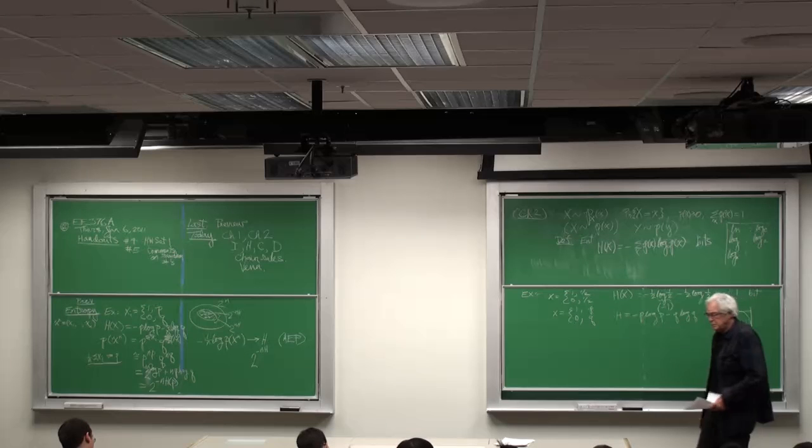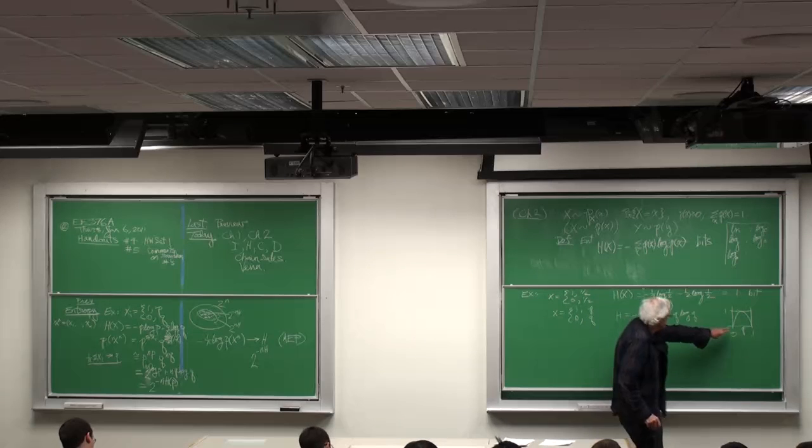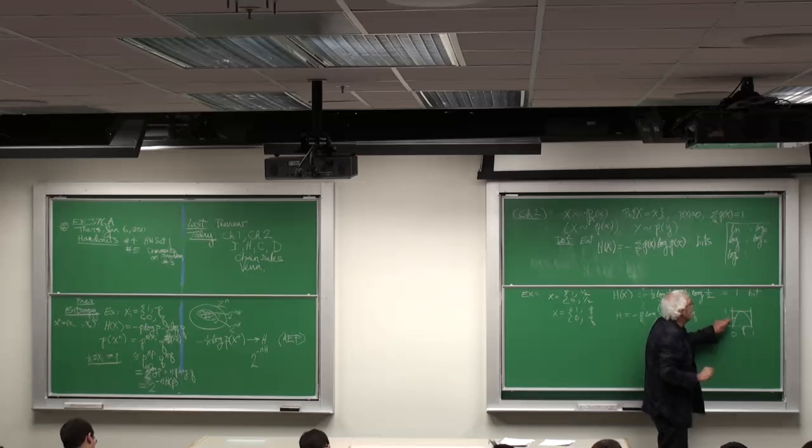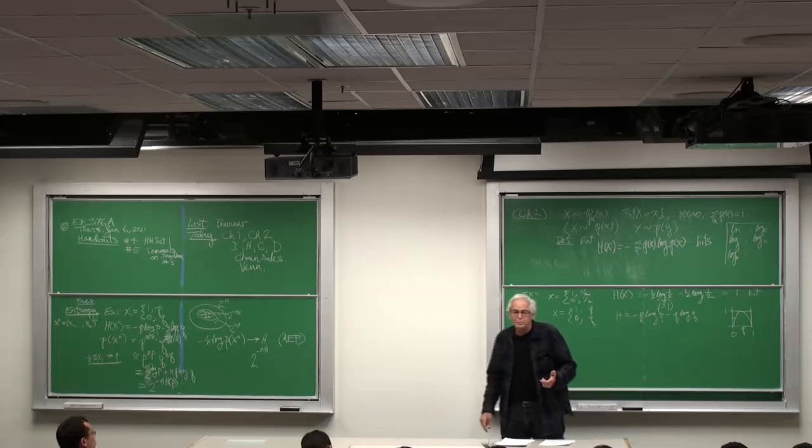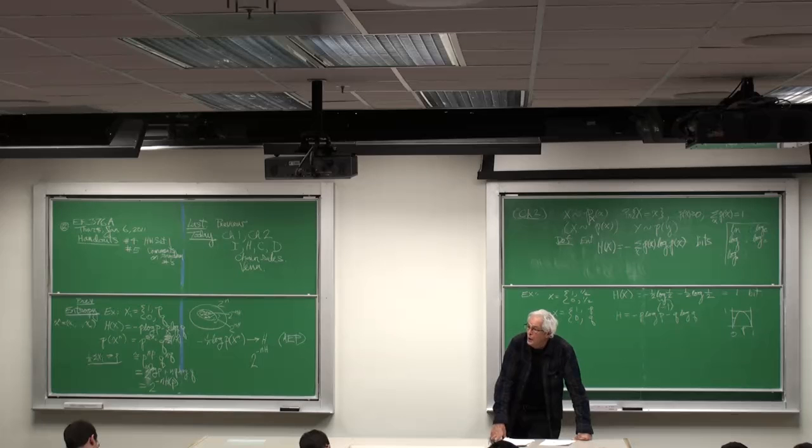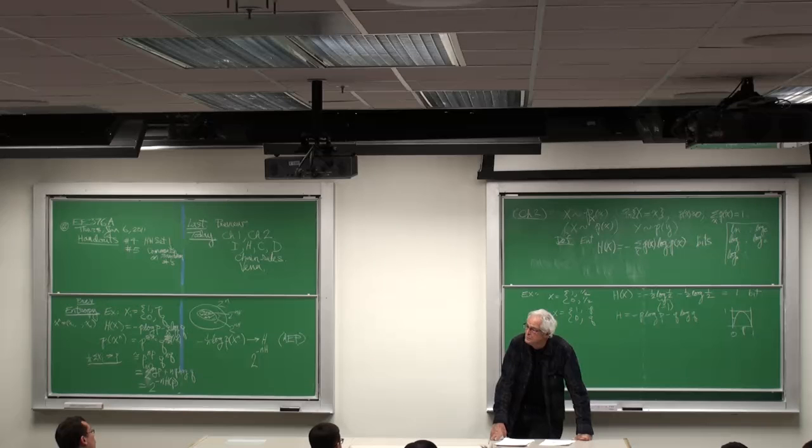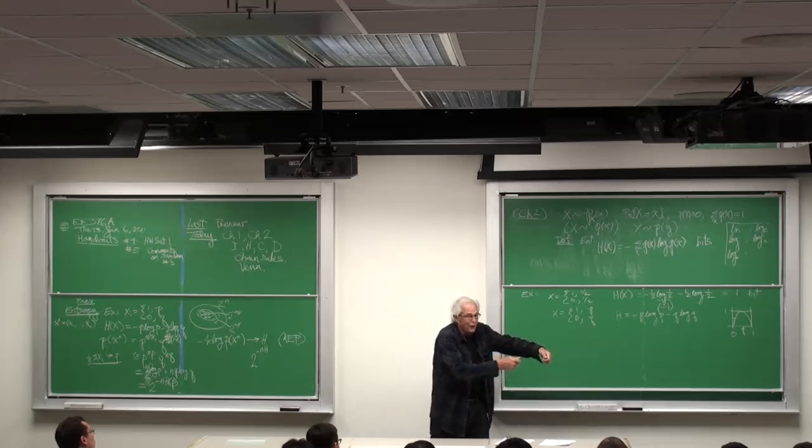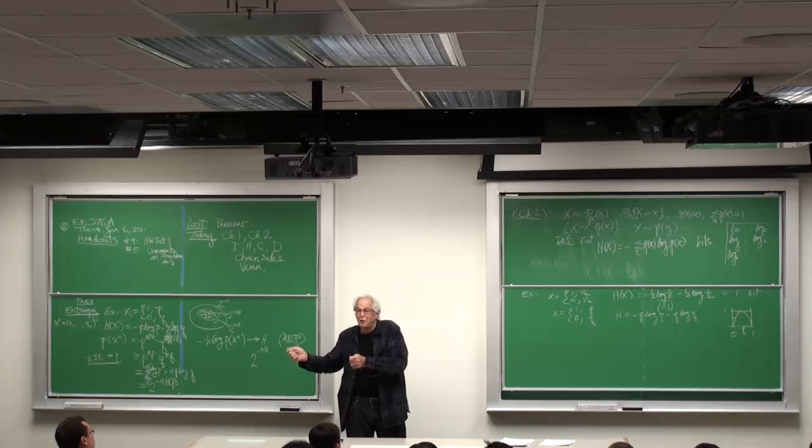When P is a half, you have the entropy of 1 bit, 1 bit of randomness. When P is 0.11, you get half a bit of randomness. It takes roughly two coin flips of a coin with probability of heads 0.11 to give you as much randomness as one fair coin flip. And indeed, we'll play around. You can map these biased coin flips into perfect unbiased coin flips.